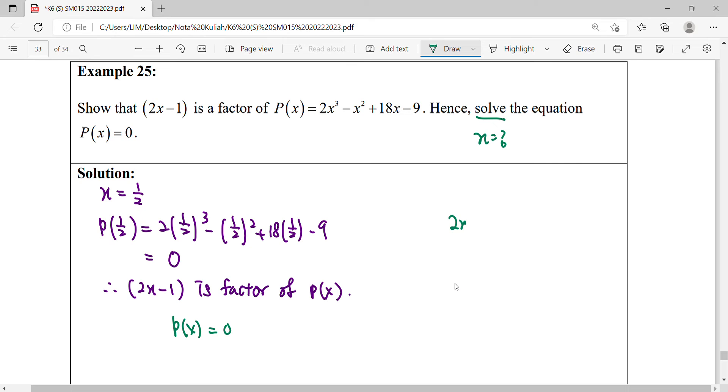For 2x cubed minus x squared plus 18x minus 9, we're going to divide with the factor 2x minus 1. The multiplier needed here is 2 divided by 2, x cubed divided by x needs a multiplier of x squared.